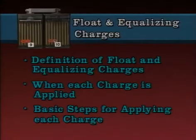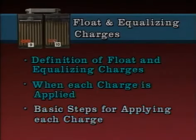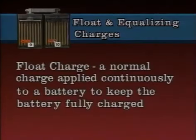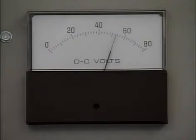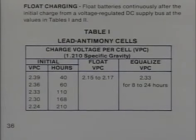The key points covered include the definition of float and equalizing charges, when each charge is applied, and the basic steps for applying each charge. A float charge is a normal charge applied continuously to a battery to keep it fully charged. The voltage is floated at a fixed level slightly above the normal open circuit voltage, allowing the battery to draw just enough current to overcome its self-discharge losses. The float voltage setting is typically specified in cell manufacturer instructions or by company procedures.